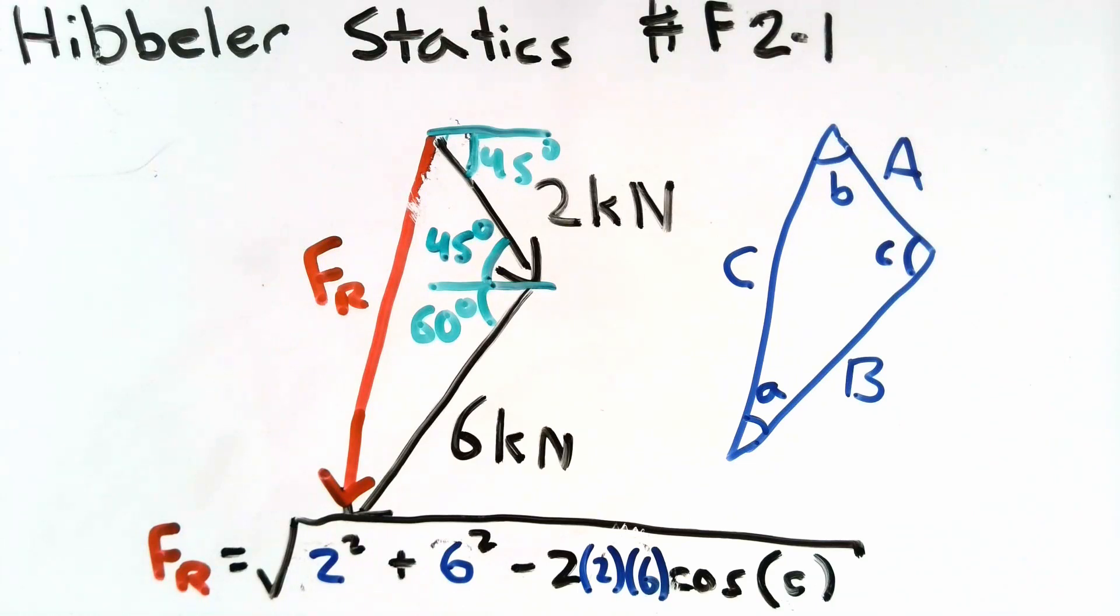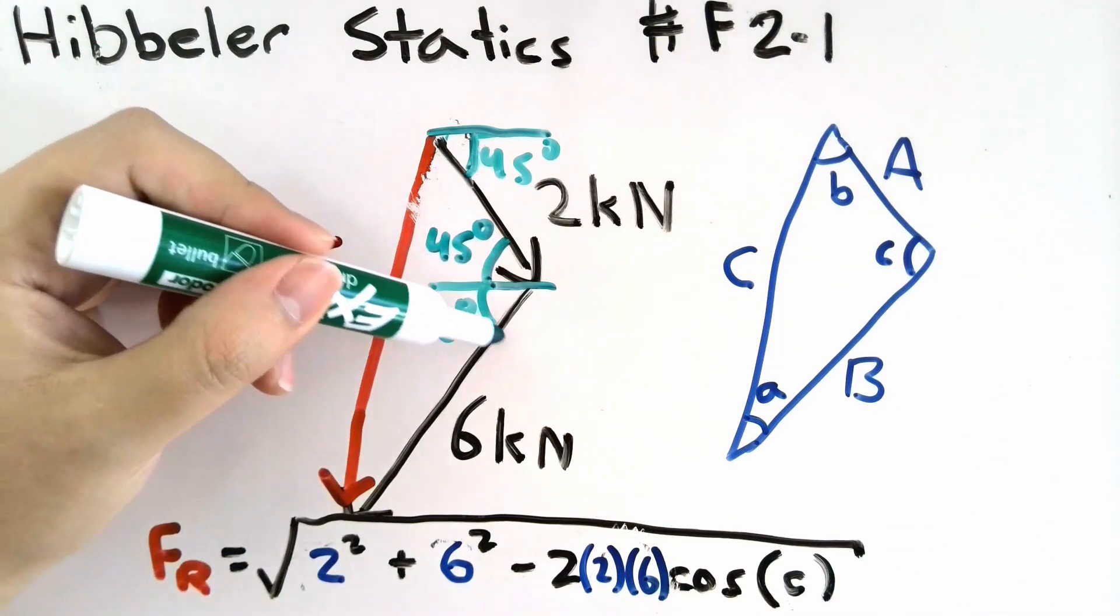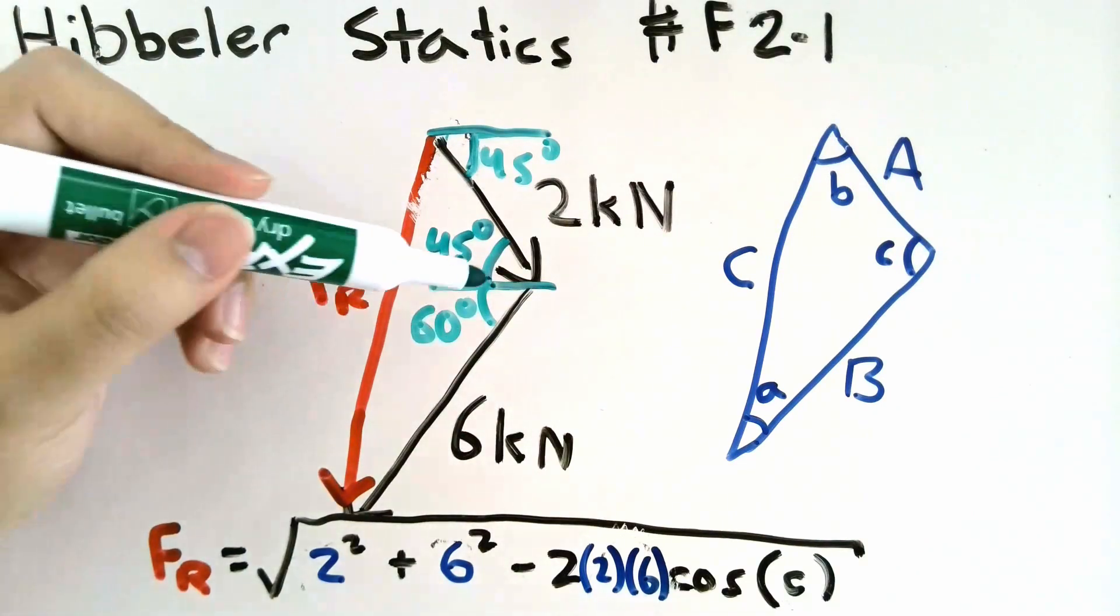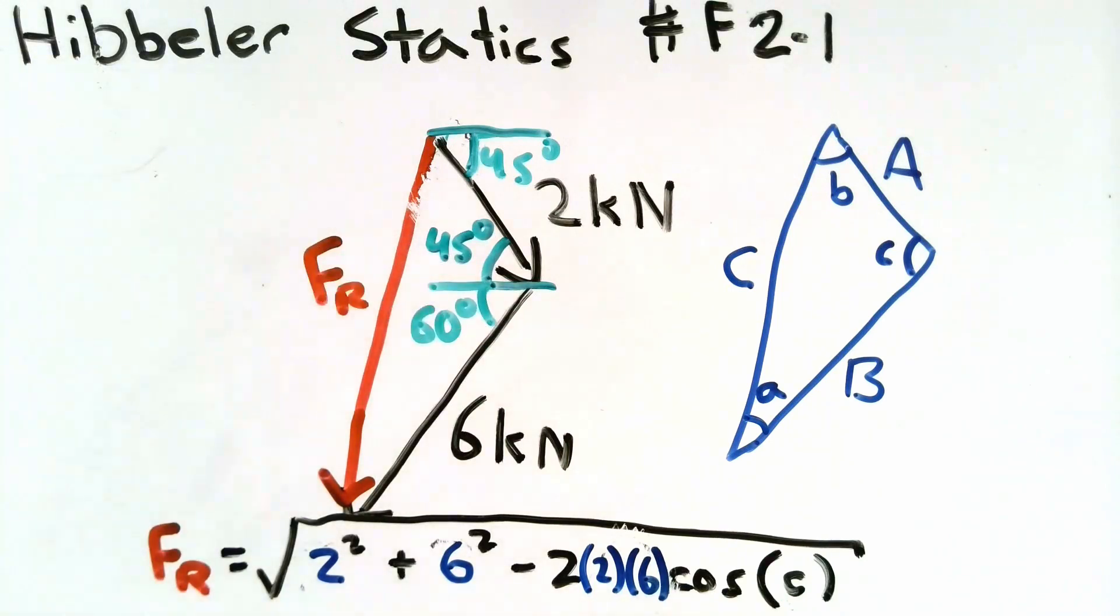If we want to find the magnitude of angle C, all we have to do is add up 45 and 60. In this case, 45 and 60 adds up to 105. And there we have it.